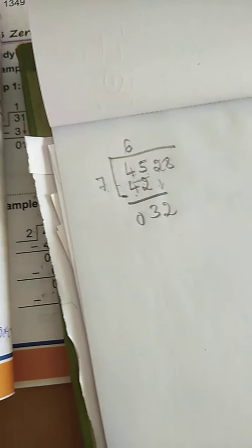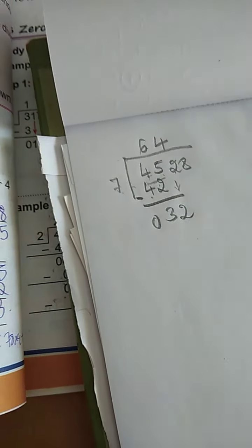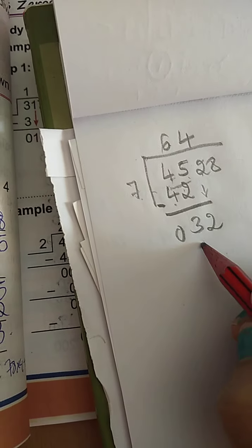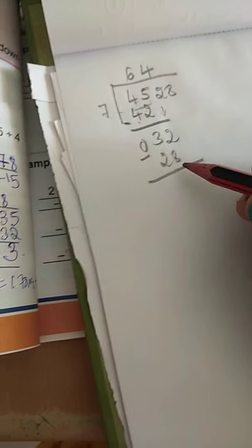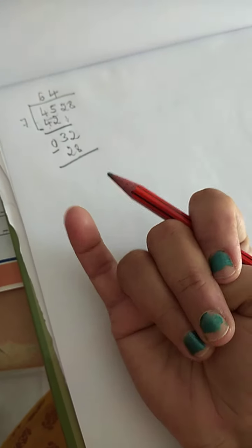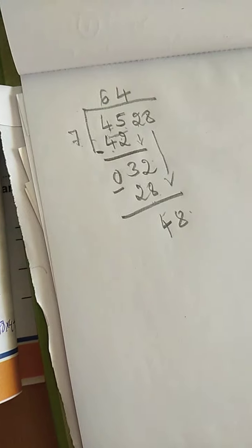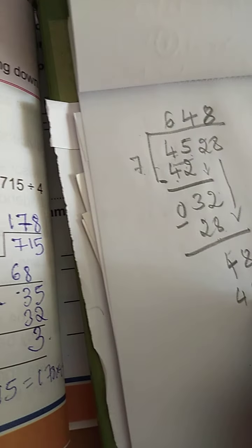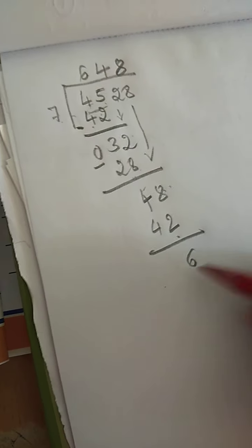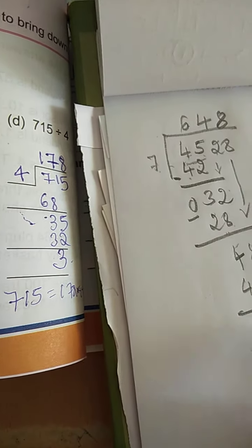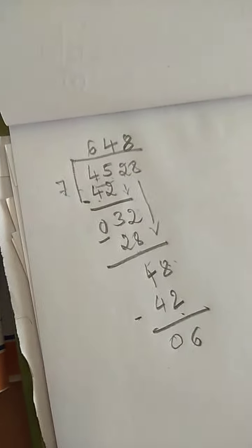Then bring down 2. So 7 times what is 32? 7 tables, 32 is not there. 7 times 4 is 28. 7 times 5 is 35. So 7 times 4 is 28. 28 to 32, count: 28, 29, 30, 31, 32. 4. So 4 comes. Bring down 8. 7 times what in 7 table is 48? 7 times 7 is 49. 7 times 6 is 42. So 8 minus 2 is 6. 4 minus 4 is 0.